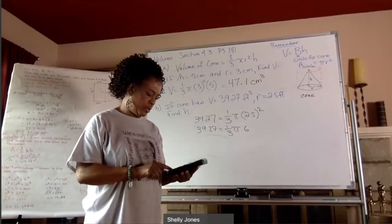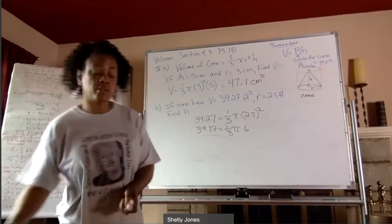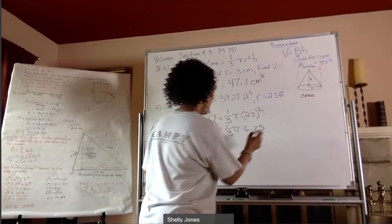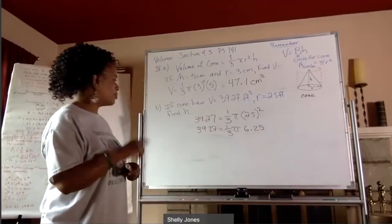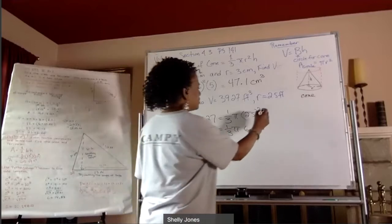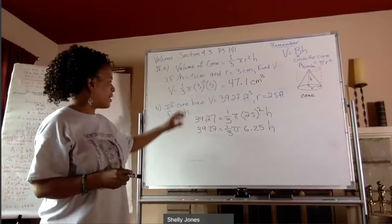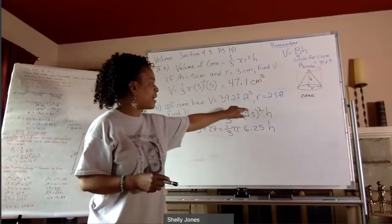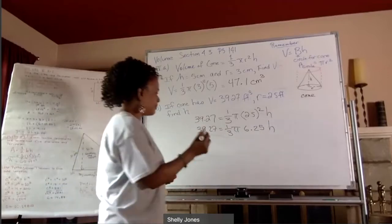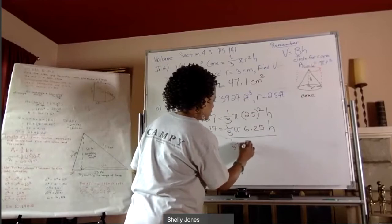All right, so what I'm going to do is I'm going to say, oh, I'm forgetting the h. That's what I'm looking for. So I have volume equals one third pi r squared h. So I forgot the h. So this is what I'm going to do. I'm going to divide everything here. I'll tell you why.